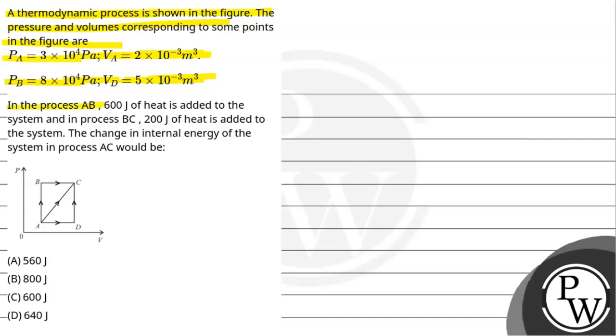In the process AB, 600 J of heat is added to the system. In the process BC, 200 J of heat is added to the system. The change in internal energy of the system in the process AC would be?